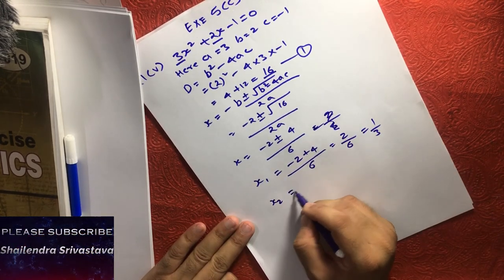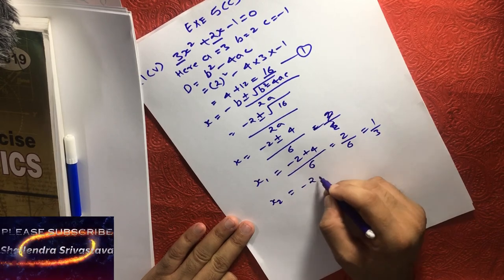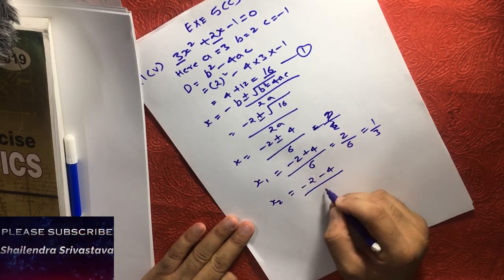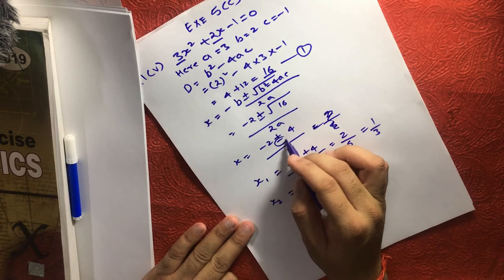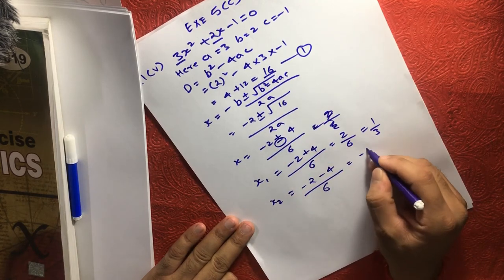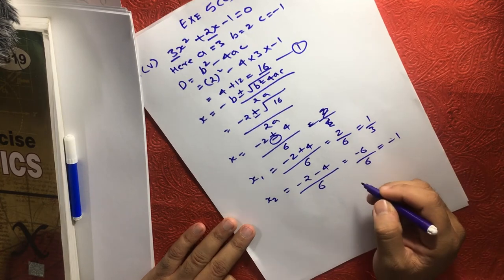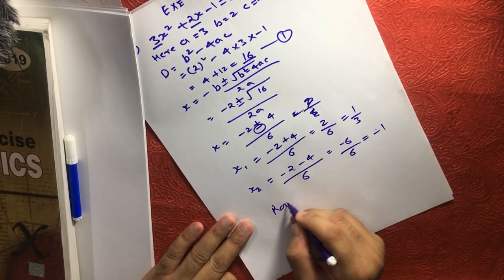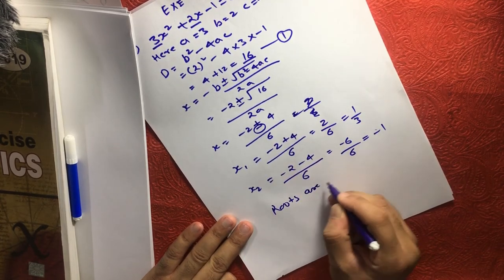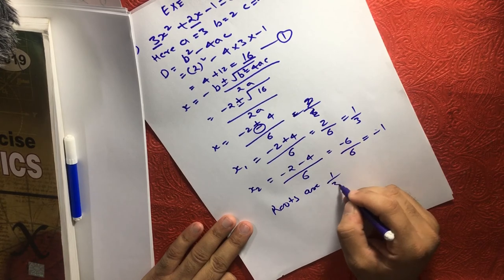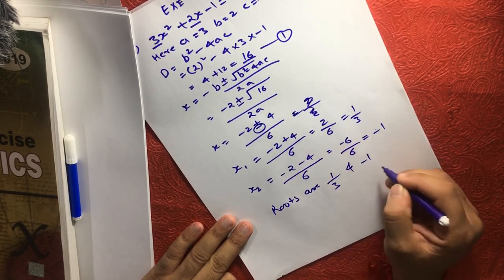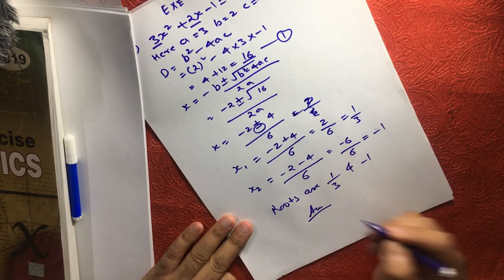And if we consider x2 is equal to minus 2 minus 4 oblique 6, I am considering the negative part here and this will become minus 6 oblique 6 which becomes minus 1. So, the roots are 1 by 3 and minus 1, and that is your answer.